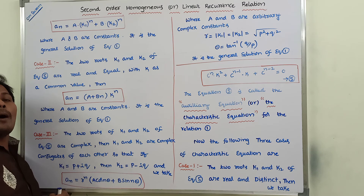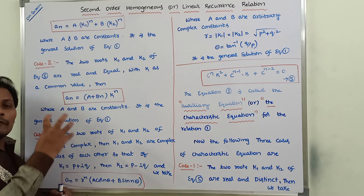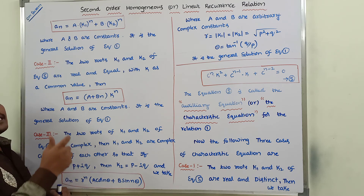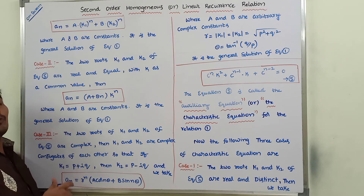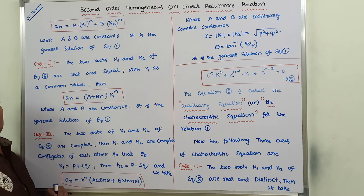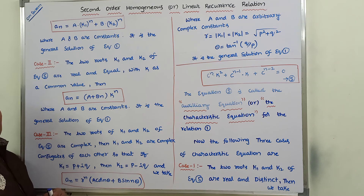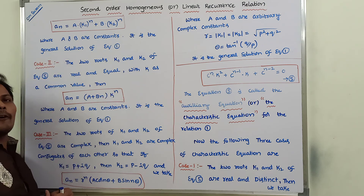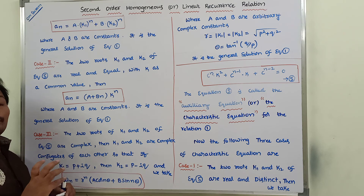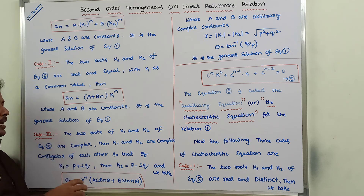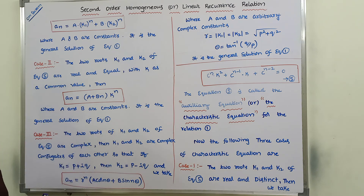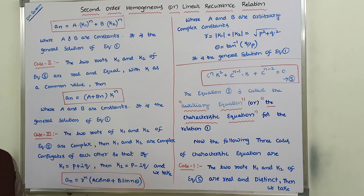In summary: first, take the general form of the second order linear homogeneous relation. Then find the characteristic equation. Find the roots of the characteristic equation. If both roots are real and distinct, use Case 1. If both roots are equal, use Case 2. If both roots are complex numbers, use Case 3. In this way, we solve the second order linear homogeneous recurrence relation.